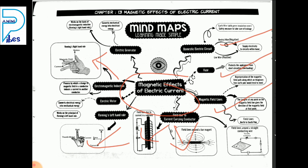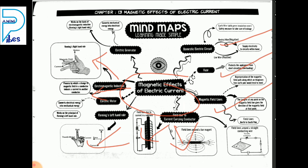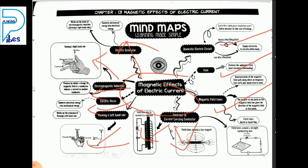Next, field due to current-carrying conductor in solenoid, Fleming's left hand rule, Fleming's right hand rule, electromagnetic induction, electric motor — how electric motor is working — and electric generator, how it converts mechanical energy into electrical energy, how it works on the basis of electromagnetic induction and Fleming's right hand rule.